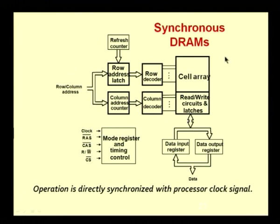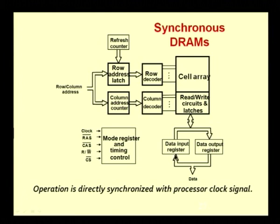Looking at the overall structure, there are some additional elements shown: a row address latch, a row decoder which goes to the cell array, a column address counter, a column decoder which connects to the read/write circuits and latches. In addition, there are input registers and output registers. Let us look at how this particular organization is used for effective access of data.